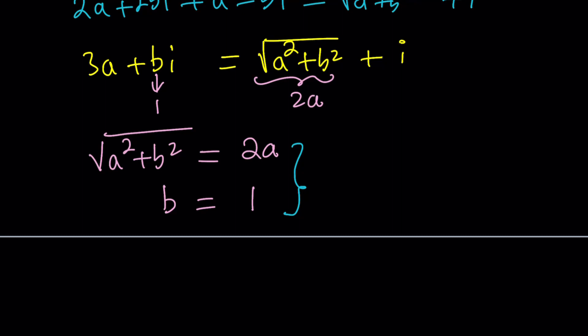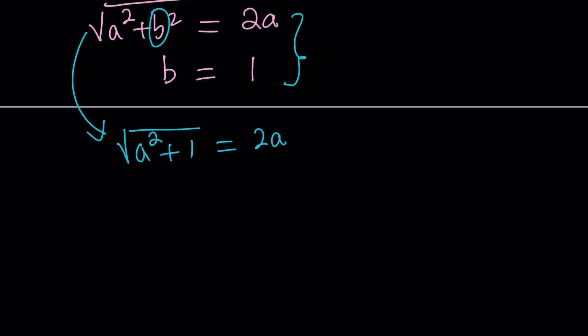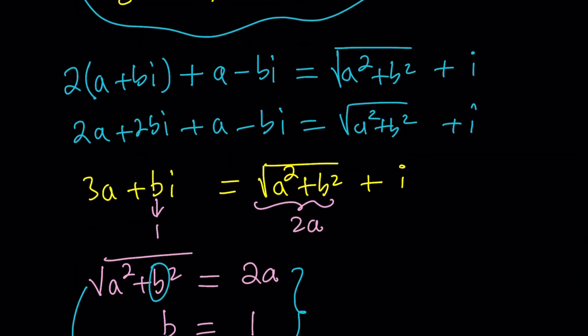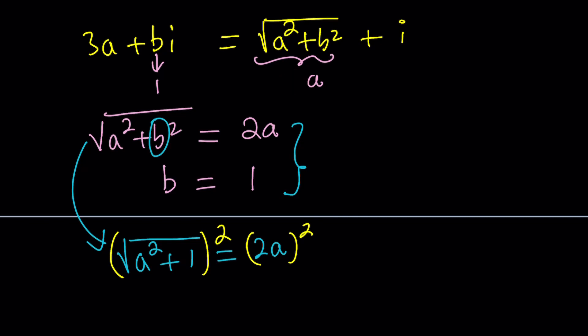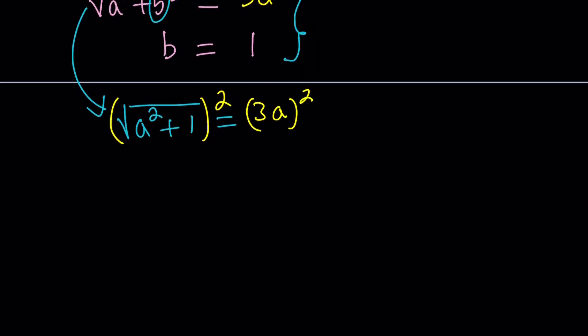Plug in, substitute 1 for B in the first equation. That's going to give us the square root of A squared plus 1 equals 3A. Let's square both sides. We get A squared plus, by the way this is supposed to be 3A. I don't know why I wrote 2A. That's supposed to be 3A. Let's fix it real quick. Now if I square both sides I get A squared plus 1 equals 9A squared. If you subtract A squared from both sides we get 8A squared equals 1 and then A squared equals 1 over 8.